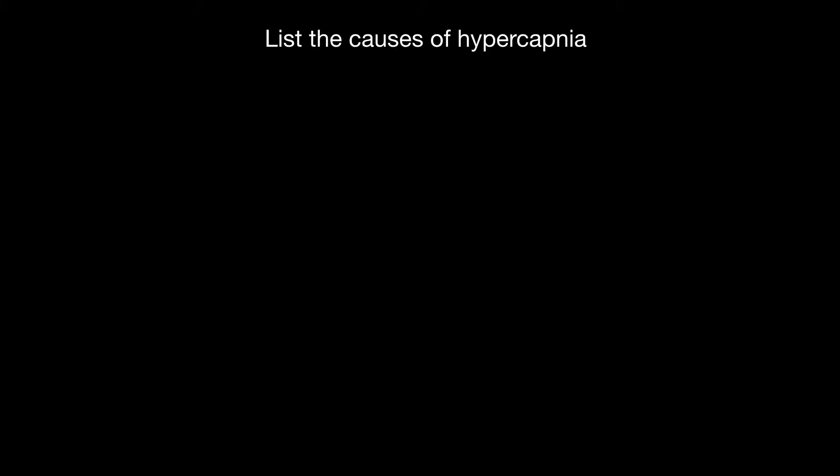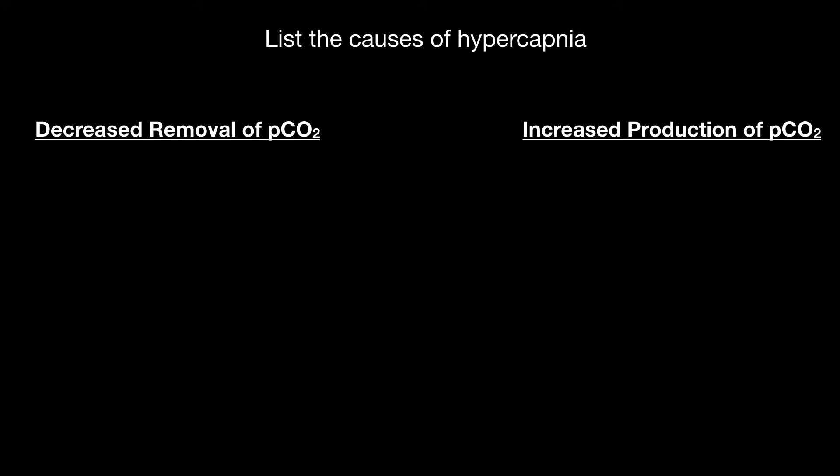Let's go back to the learning objectives and list the causes of hypercapnia. You can break this up into two subcategories: decreased removal of PCO2 and increased production of PCO2. With decreased removal of PCO2, you can have decreased minute ventilation. I think of two ways that you have decreased minute ventilation.